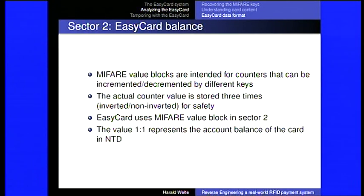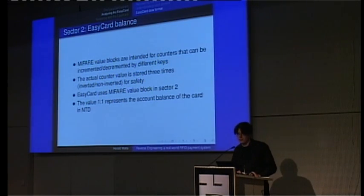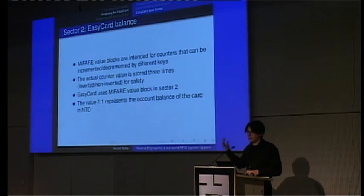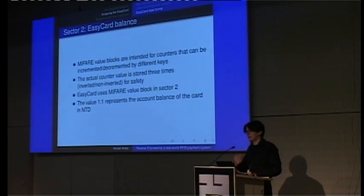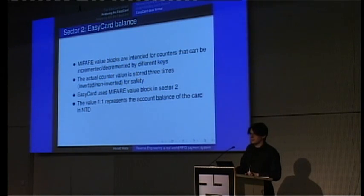It turns out there are a number of things you can find. Sector 2 is the balance, stored in what's called a Mifare value block — a feature of the Mifare card where a block represents a value (in this case, 400 NT dollars). There are two different keys: one key can only decrement the counter, and the other key allows writing. Given that keys are easy to recover now, this security model is somewhat moot — but this was how the system was originally designed.